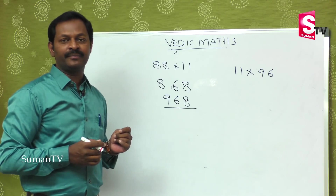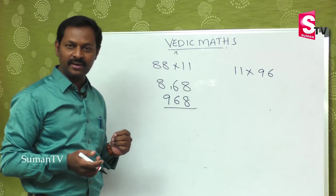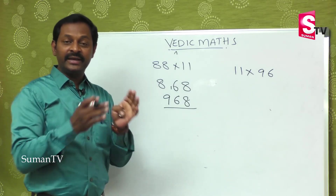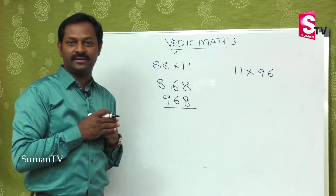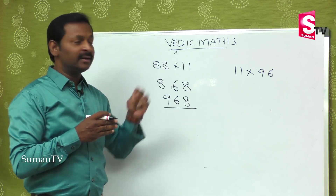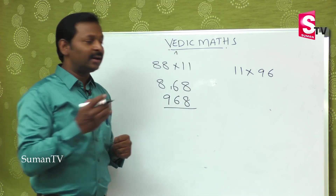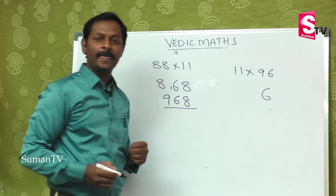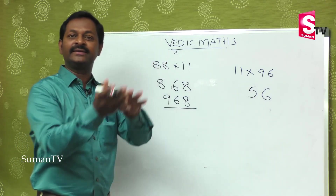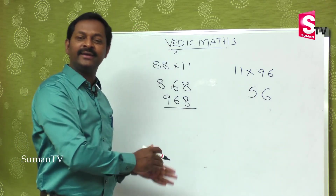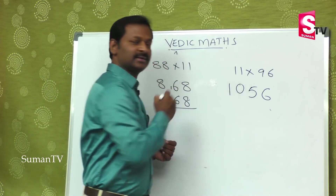Now 96 into 11. First is 9, last is 6, and 9 plus 6 is 15. So 9, 15, 6 is the wrong answer. The last digit stays as 6, out of 15 the 5 stays in the middle, and 1 carries over and adds to 9, giving 10. So the answer is 1056. Got it?